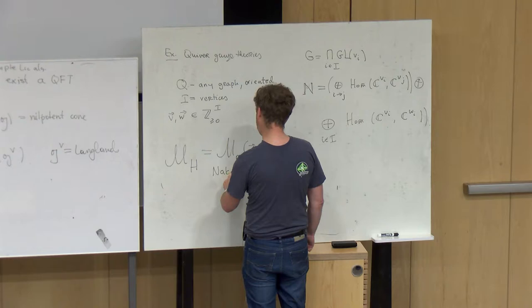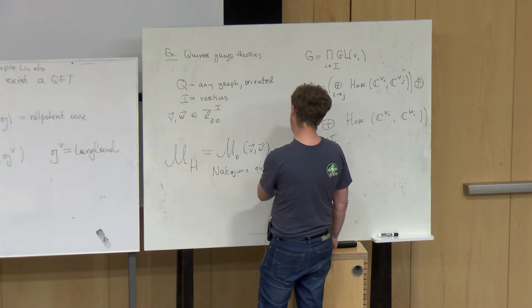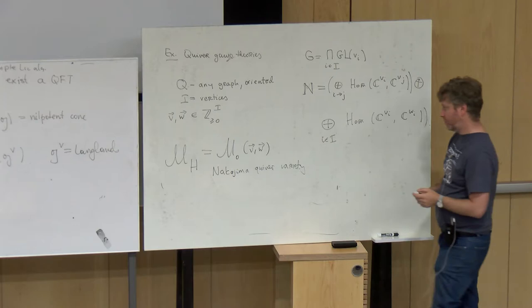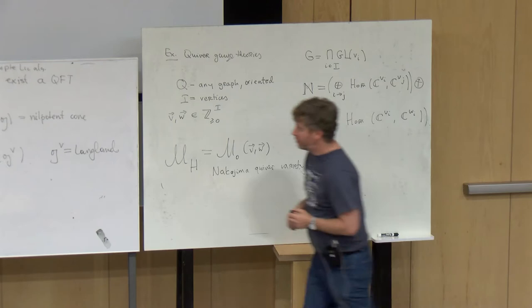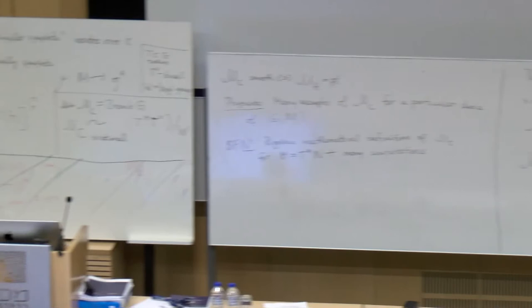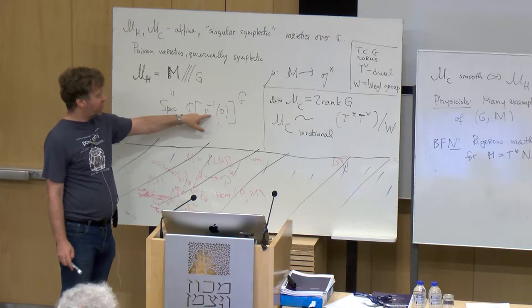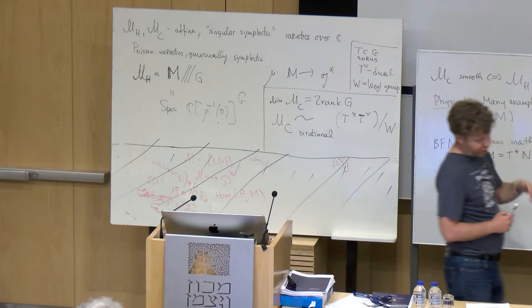Suppose we have any graph, and we fix an orientation. Let I be a set of vertices. To talk about the quiver gauge theory we need to fix two vectors V and W, which lie in Z greater-or-equal-zero to the power I. Then out of this data we're supposed to be able to produce a gauge theory. In this case the Higgs branch will by definition be the corresponding Nakajima quiver variety. The group G is going to be the product of all GL(V_i) for i in I.